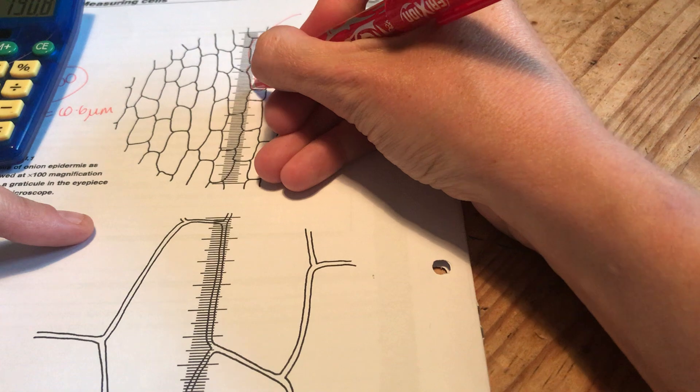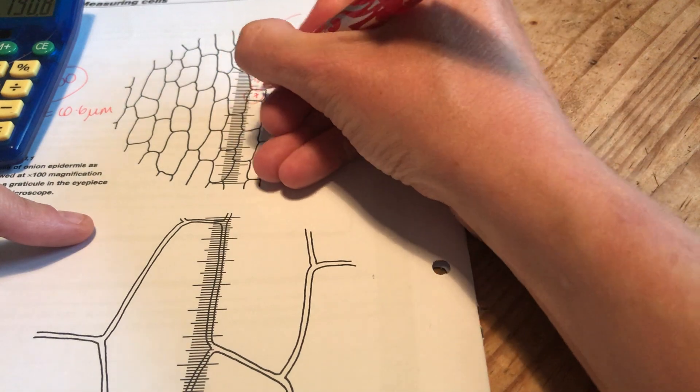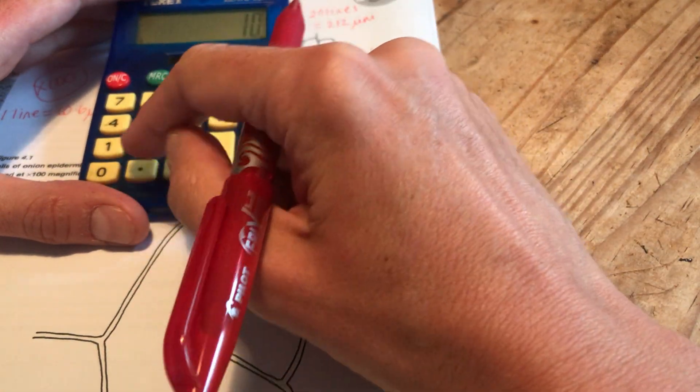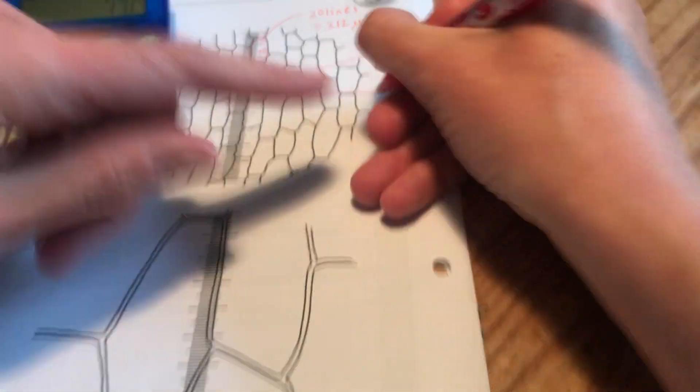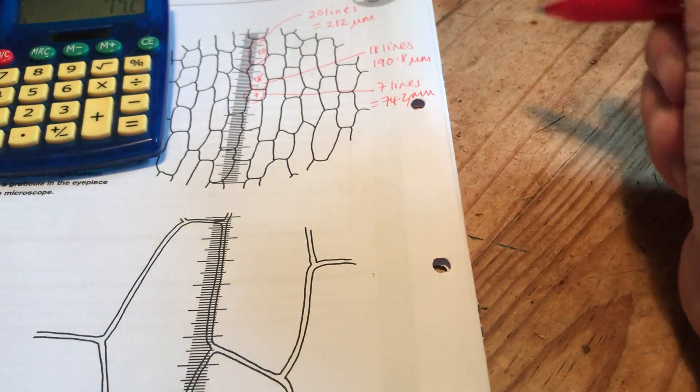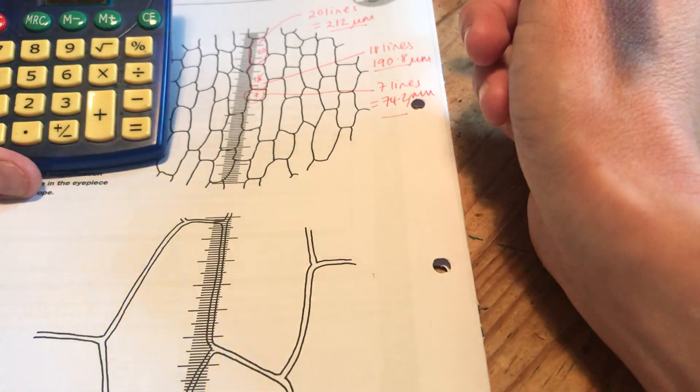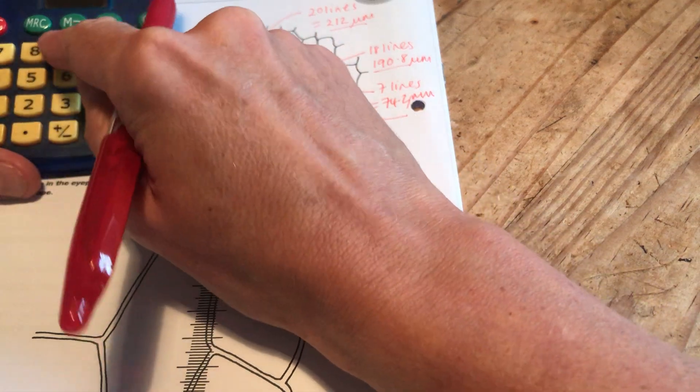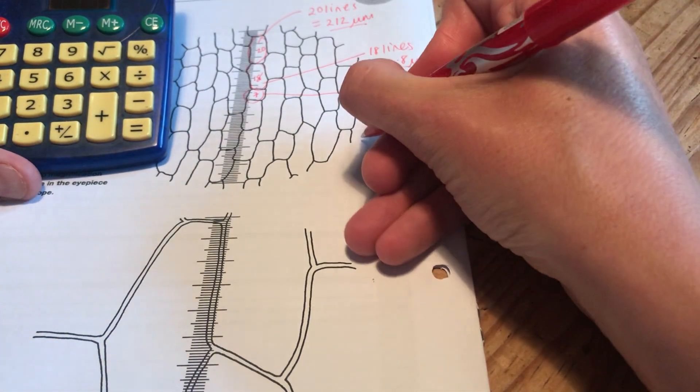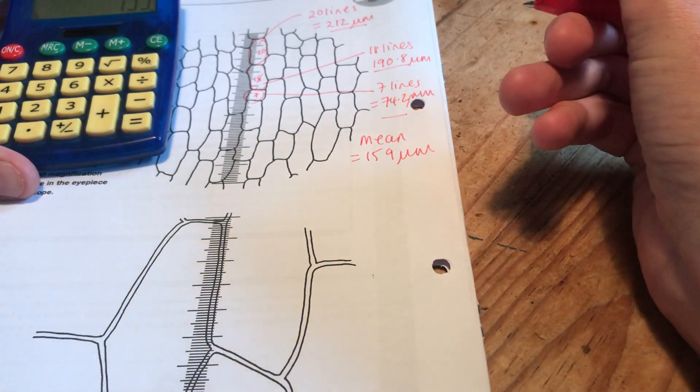I could do this little one here. One, two, it's kind of hard to look over my phone. Is it about seven? So this is seven lines and I know each line is 10.6. So I say this cell is 74.2 micrometers. I could keep going and doing loads of those but let's just say I've done three. I could take a mean of those three lengths there. So let's say I've got 212 plus 190.8 plus 74.2 divided by three. So my mean is 159 micrometers. That's one way of doing that.